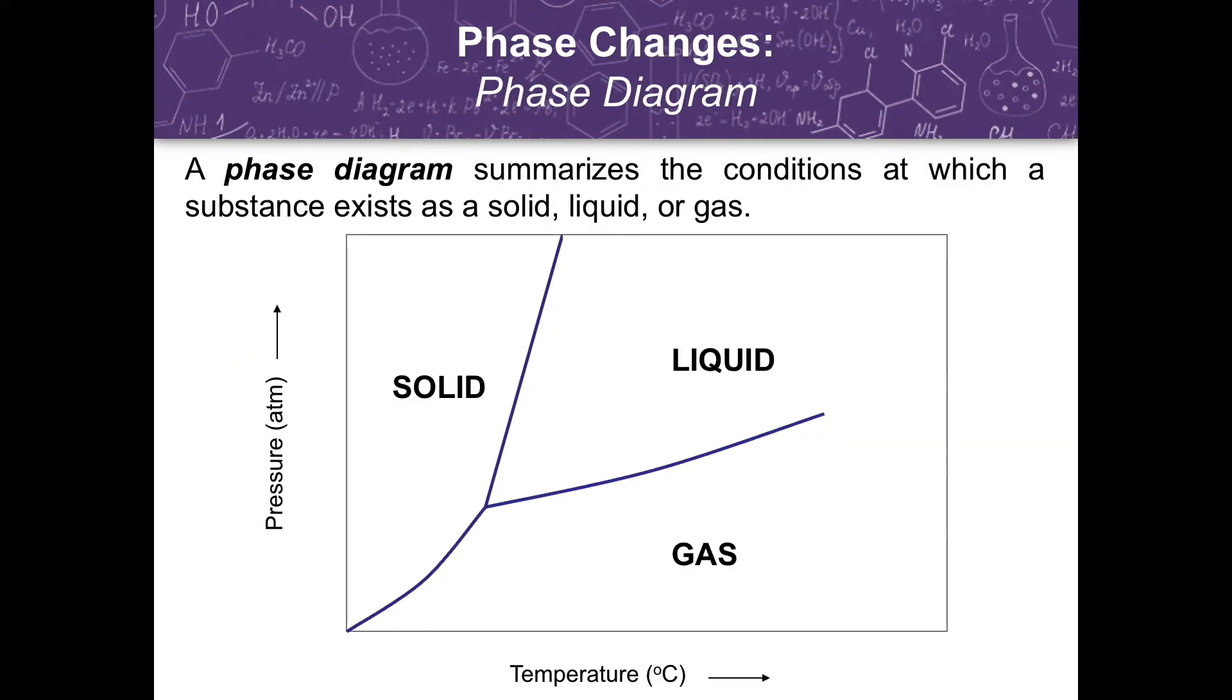And then lastly, we talked about the phase diagram. In the phase diagram, it summarizes the condition at which a substance exists as a solid, liquid, or gas. At this point, we have the melting and freezing from solid to liquid, and then liquid to gas is what we call freezing.